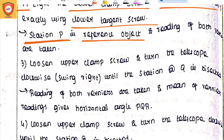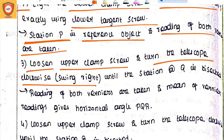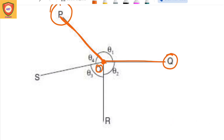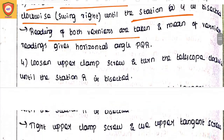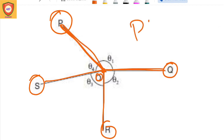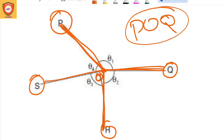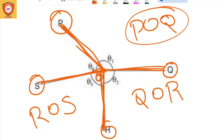The instrument is at one station. We note the reading for vernier A and vernier B, same as station P. We release the set, swing the telescope, and view station Q using the clamp screw and tangent screw. We note the readings for stations R and S, adjusting the telescope with the clamp screw and tangent screw. Angle P-O-Q is one angle, Q-O-R is one angle, R-O-S is one angle, and S-O-P is one angle.